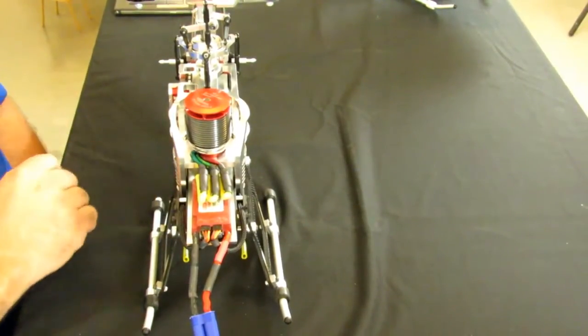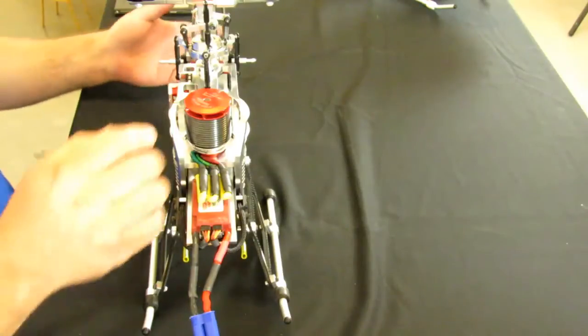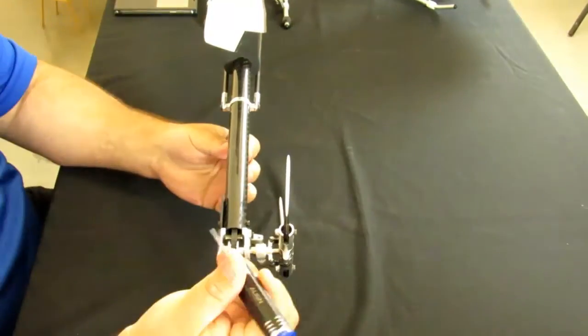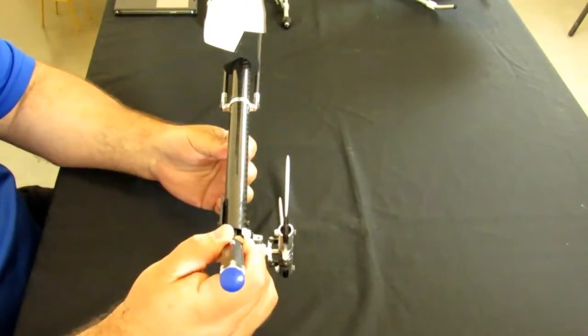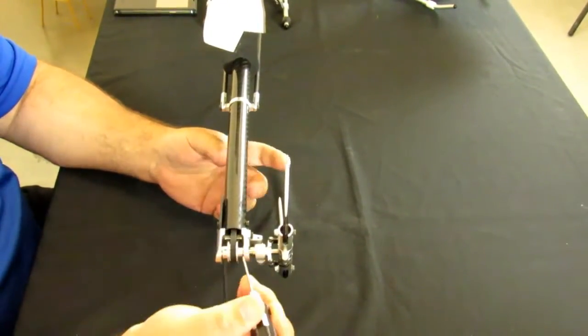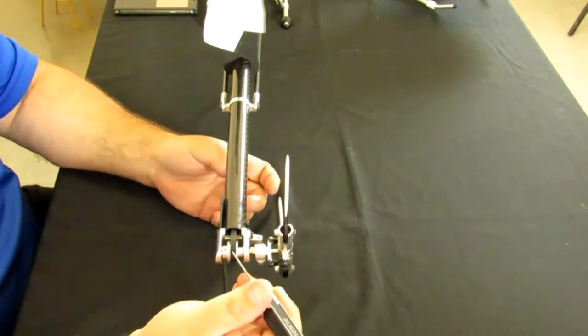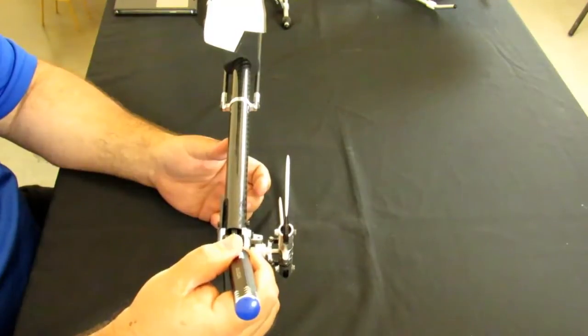From here, we move to the tail. Tail's very simple. We check the tension at the very back. This one is set up for more of a sport flyer. It is set up for not hard 3D. Hard 3D, run a little more tension on the belt. Lighter 3D, sport flying, you can leave the belt a little bit looser.